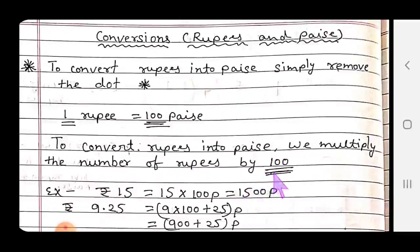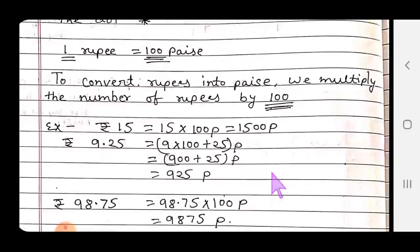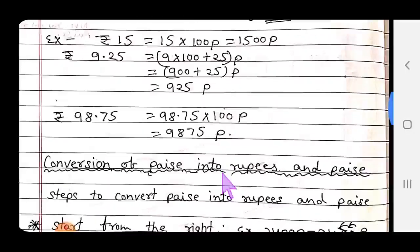Example: 15 rupees. To convert to paise, multiply 15 by 100 paise, you get 1500 paise. Second example: 9 rupees 25 paise. To convert both to paise, multiply 9 by 100, which converts to paise, plus 25 paise. So 9 times 100 equals 900 plus 25 equals 925 paise.